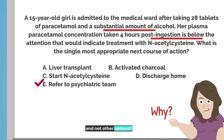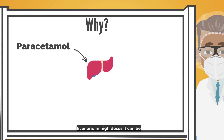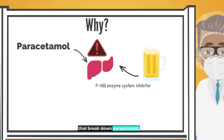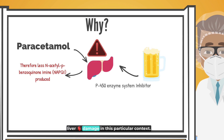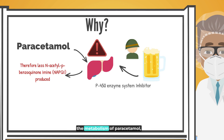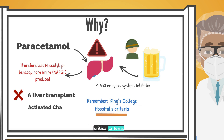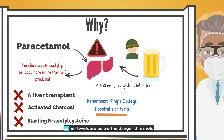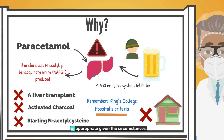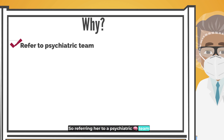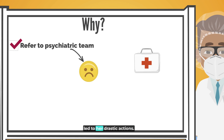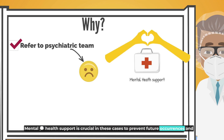Why is that the answer and not other options? As we know, paracetamol is usually broken down in the liver, and in high doses it can be extremely harmful. However, alcohol changes the game — it inhibits the same liver enzymes that break down paracetamol, the P450 enzyme system, potentially reducing the risk of severe liver damage in this particular context. Acute alcohol ingestion actually plays a protective role by slowing the metabolism of paracetamol, thus lowering the immediate risk of liver failure. A liver transplant is far too premature without signs meeting specific critical criteria. Activated charcoal is not beneficial after one hour of ingestion. Starting N-acetylcysteine isn't necessary as her levels are below the danger threshold. Sending her home isn't safe or appropriate. Referring her to a psychiatric team not only addresses the immediate overdose but also the underlying issues that led to her drastic actions. Mental health support is crucial in these cases to prevent future occurrences and ensure comprehensive care.